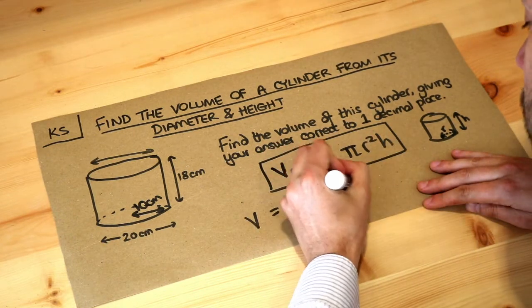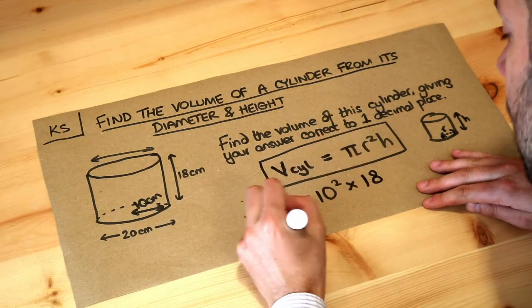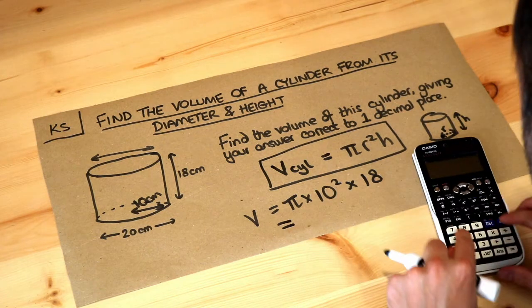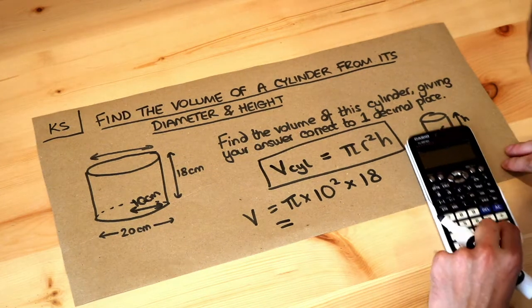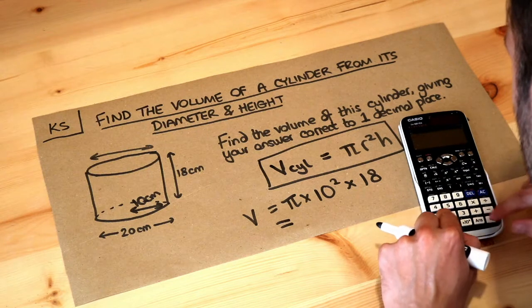So, 10 squared multiplied by the height of the cylinder, which is 18. If we input that into our calculator: shift π to get π, then times by 10 squared, multiplied by 18.